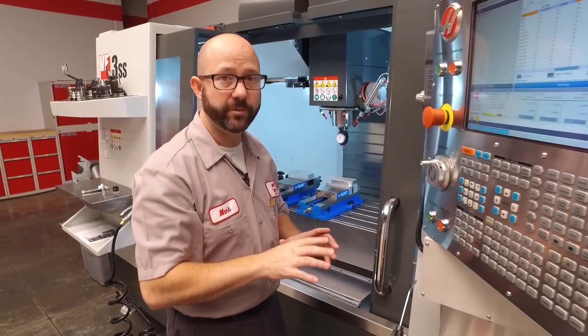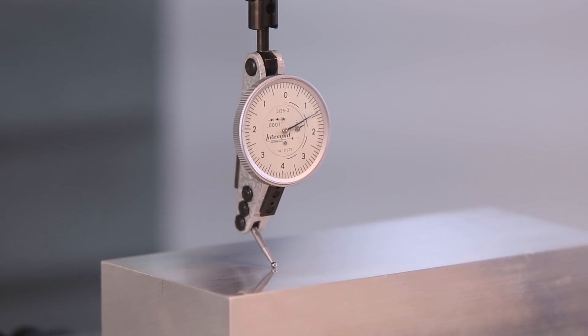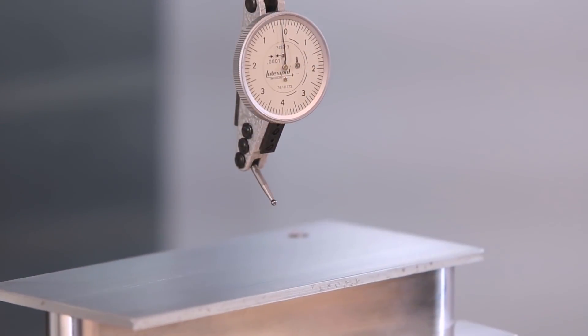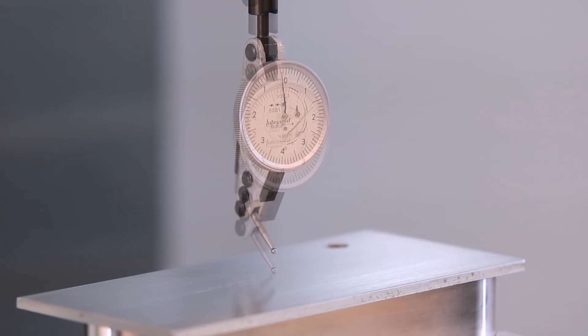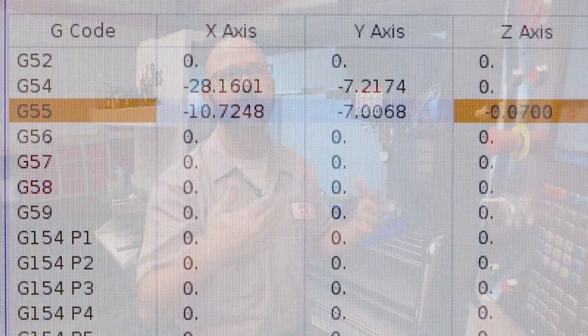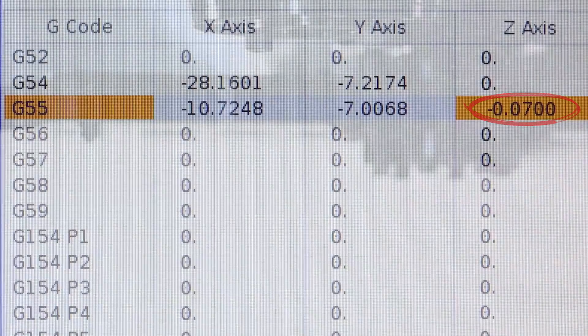I just want to mention that we could have used any type of indicator really. We just zero it out on the point at which we touched off our tools, zero out our operator Z value, jog up and over to our next vise, in this case G55, find out that position. Now we know the distance between our second vise and our touch off point and we enter that in as our work offset Z value. Now, I'm going to swap out to a pointy drill and we're going to check this G55 Z work offset.